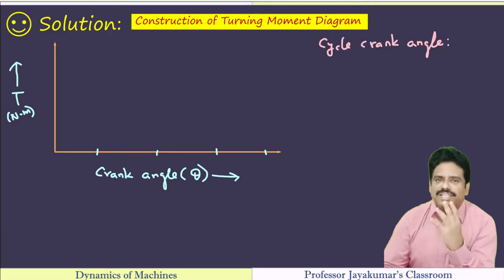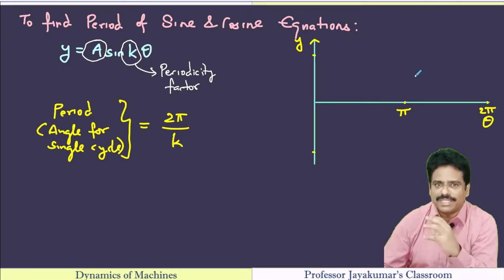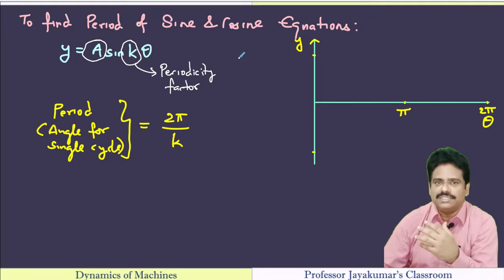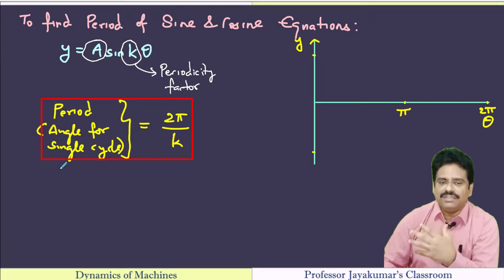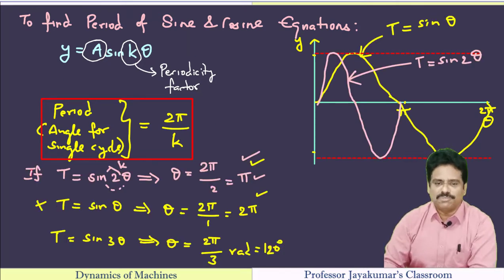First, let us find the cycle crank angle. Let me bring in some basic mathematics concepts for better understanding. To determine the period of a sin or cosine function: if y equals A sin(kθ), where A is the amplitude and k is the periodicity factor, the angle for a single cycle is determined by the formula 2π divided by k.